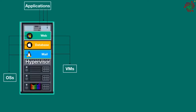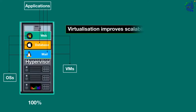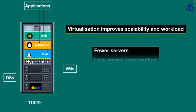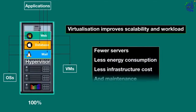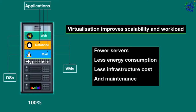One server can do the work in place of three servers. As you can see, this server is running three different virtual machines, operating systems, and applications. More importantly, the full capacity of the server is being utilized. So by creating multiple virtual machines on a single server, virtualization improves scalability and workloads while resulting in the use of fewer servers, less energy consumption, and less infrastructure cost and maintenance. It is the most efficient way to reduce expenses and boost efficiency.